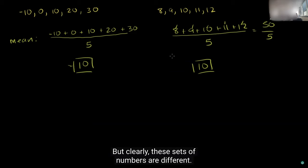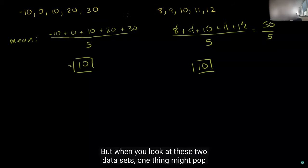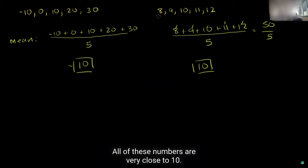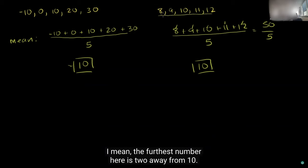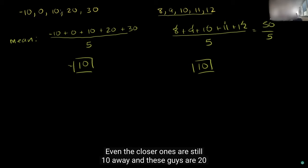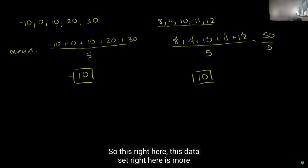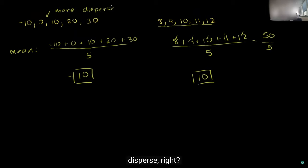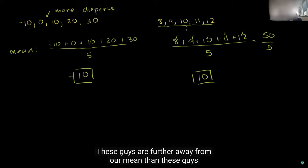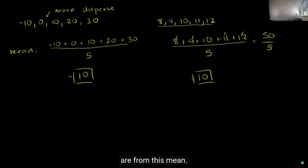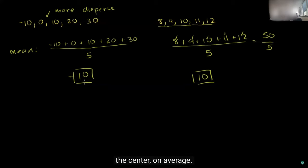But clearly, these sets of numbers are different. If you just looked at the mean, you might say these sets are very similar. But when you look at the two data sets, one thing pops out: all of the numbers in the second set are very close to 10 — the furthest is only 2 away. In the first set, the numbers are much further away from 10; even the closer ones are 10 away, and some are 20 away. This first data set is more disperse — these values are further from the mean.